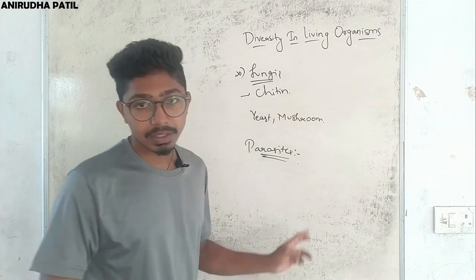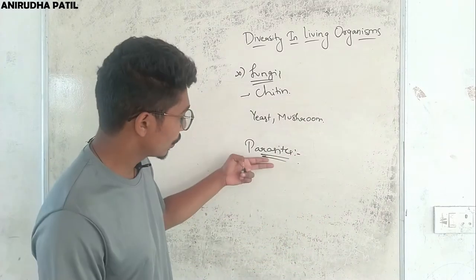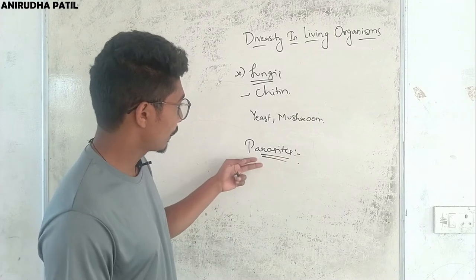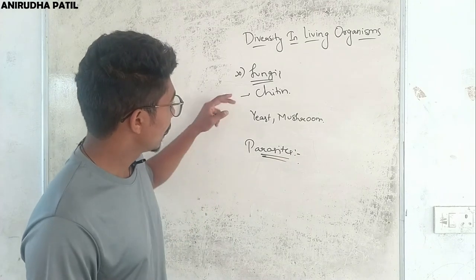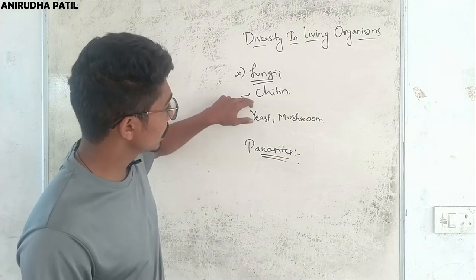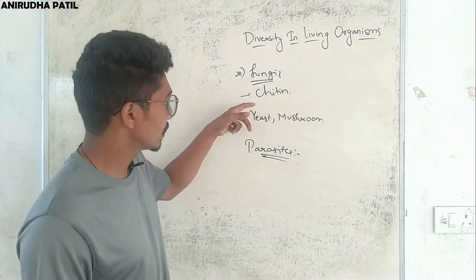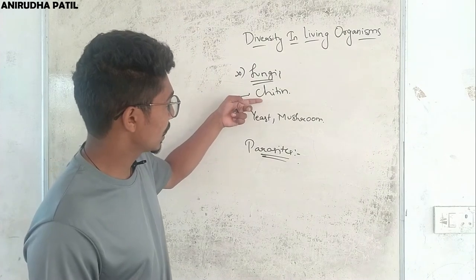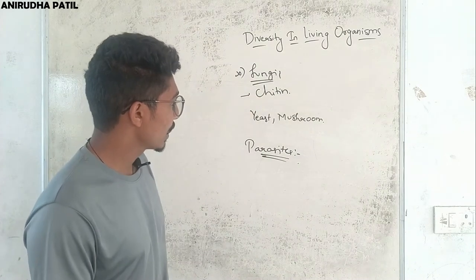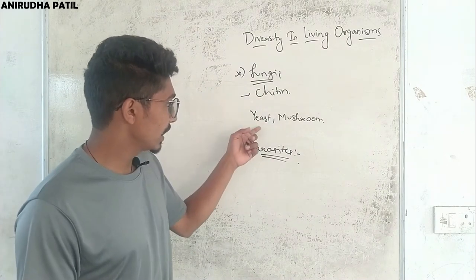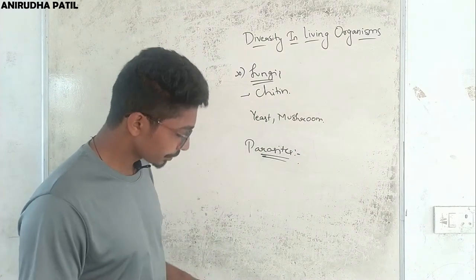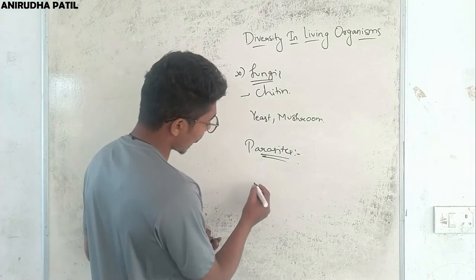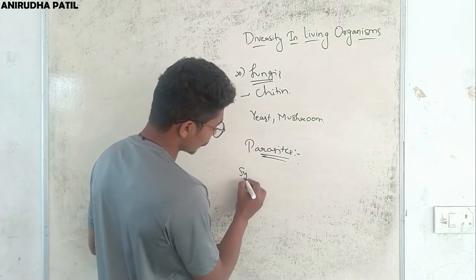Fungi are heterotrophic, meaning they depend on others for food. Their cell wall is made up of a strong sugar named chitin. Some examples are yeast and mushroom. Some fungi also have symbiotic associations.